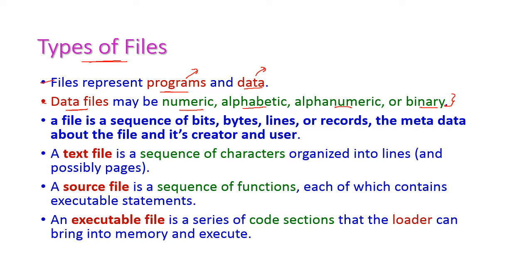A file is a sequence of bits, bytes, lines, or records, as well as the metadata about the file and its creator and user. These are the content and attributes of the file. File is a sequence of bits, bytes, lines, and records, and it also contains the metadata, that is the attributes of files.